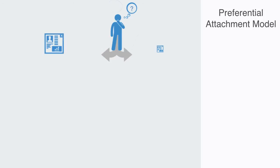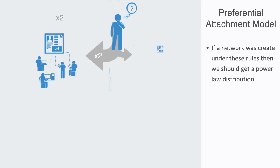Within this model, if you are say building a website and choosing which other website to link to, then you will be twice as likely to link to a website that has twice as many links as another. To formalize this, the probability that you will make a link to a site is proportional to the size of the site. If a network was created under these rules, then we should get a power law distribution.